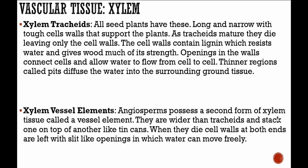Angiosperms possess a second form of xylem tissue called a vessel element. Vessel elements are wider than tracheids and stack one on top of another like tin cans. When they die, cell walls at both ends are left with slit-like openings through which water can move freely — all of this referring to water because we're talking about xylem vascular tissue.